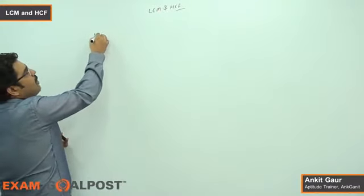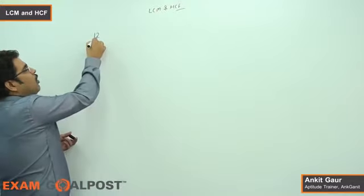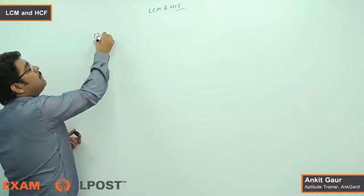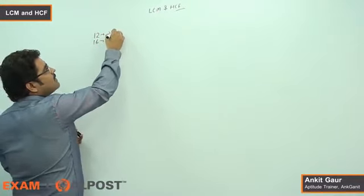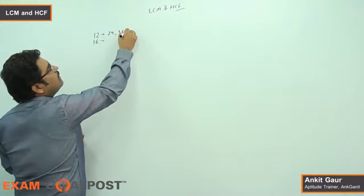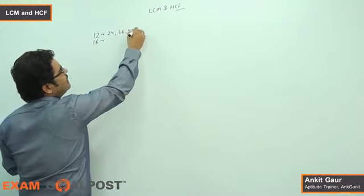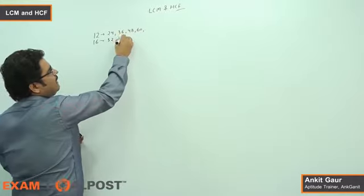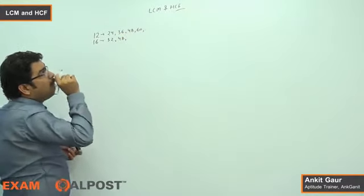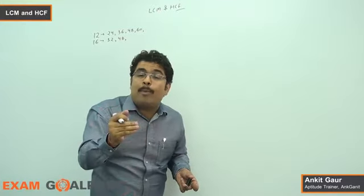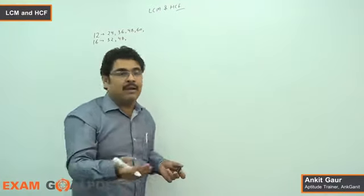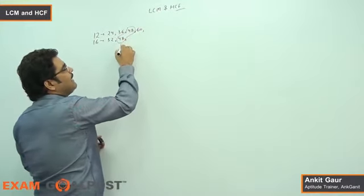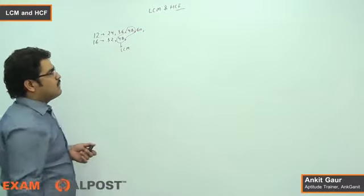Let's take two numbers: 12 and 16. I would like to explain Least Common Multiple. What does the least common multiple mean? The multiples of 12 are 24, 36, 48, 60 and so on. The multiples of 16 are 32, 48 and so on. So the Least Common Multiple is the smallest common multiple — 48 is the least common multiple of 12 and 16.